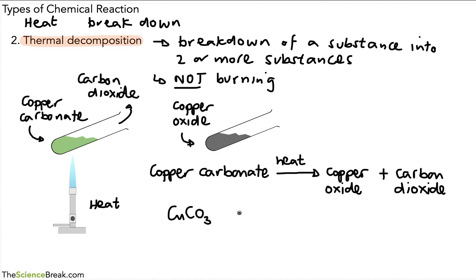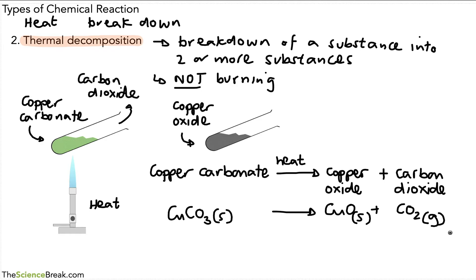We could also write a formula equation for this. Here, copper carbonate breaks down to copper oxide and carbon dioxide. It's worth introducing what we call state symbols: in little brackets we have small letters — 's' stands for solid and 'g' stands for gas. So copper carbonate is a solid, copper oxide is a solid, and the carbon dioxide is a gas. State symbols are often used in chemical reaction equations.